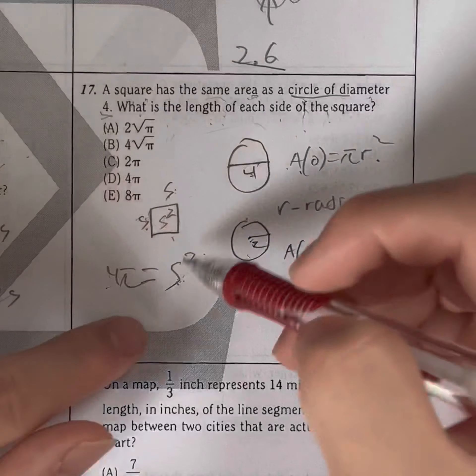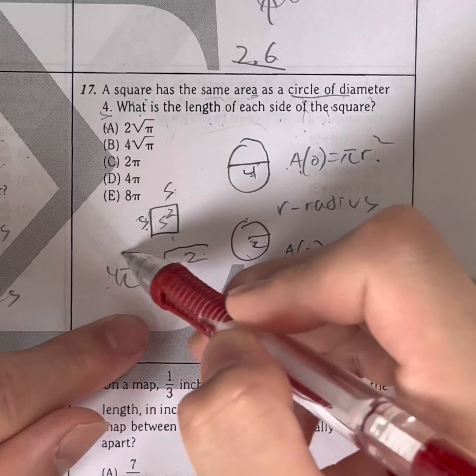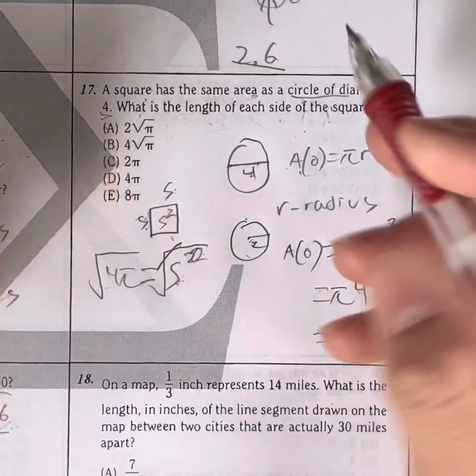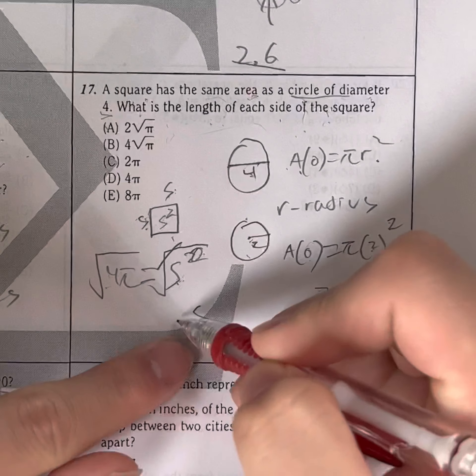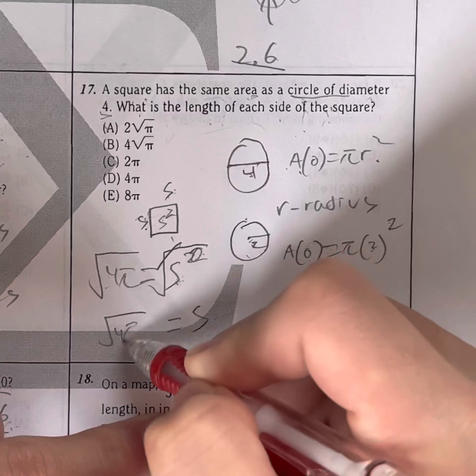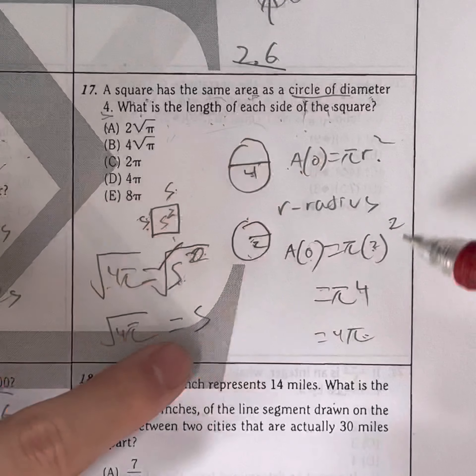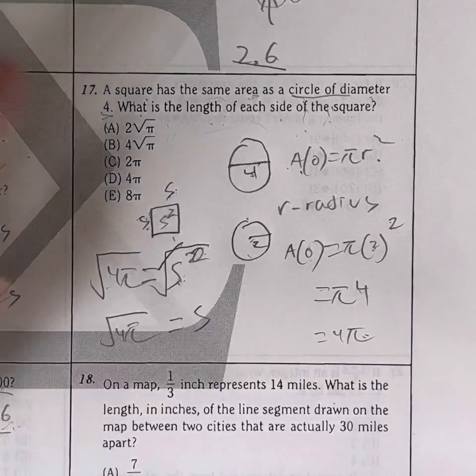So how do you solve for S squared, or isolate S by itself? All you have to do is do the square root of that. You use the square root, and the square cancels out, giving you side length is equal to the square root of 4 pi. Well, do you see any answers that look like this? Well, technically, you would right away choose B, right? But it's not B, because we can simplify this.